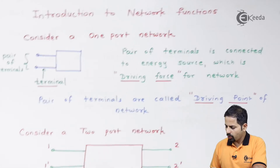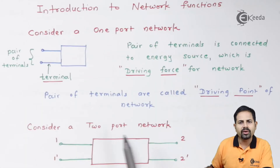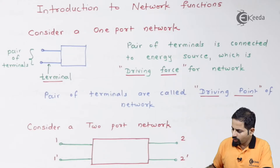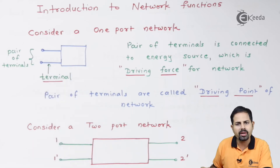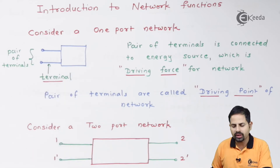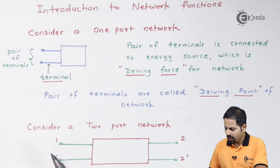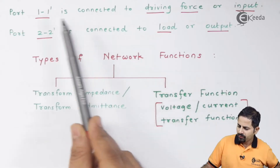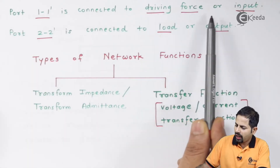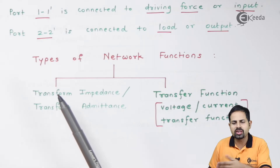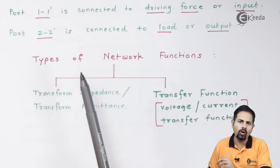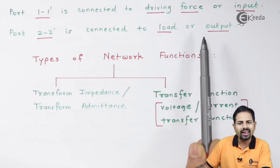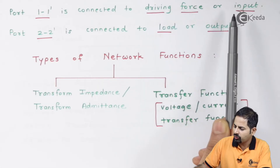For this two-port network, port one–one-dash can be called the input pair. This port is connected to a driving force which drives the circuit, and the two–two-dash port is connected to some load or output. In general, we call this driving force the input and the load the output.